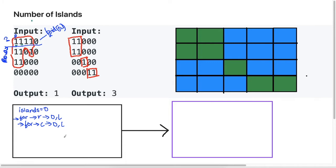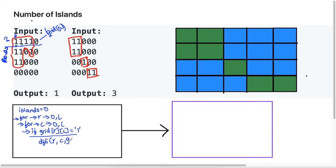Now with two for loops we can visit each cell. The next step is to check if the cell you're visiting is a one. If it's not a one, you don't need to do anything. So you check: if at my current row and column position I see a one, then I need to count and use DFS to do that. I will call the DFS function and pass in the row index, the column index, and the grid, because we're going to do this in place — we're stamping those islands as visited.